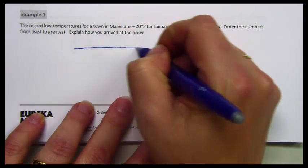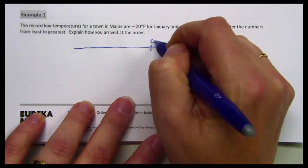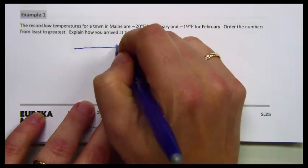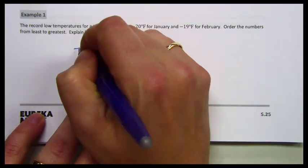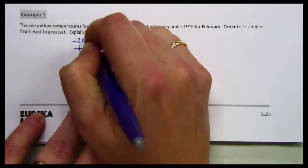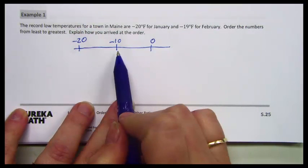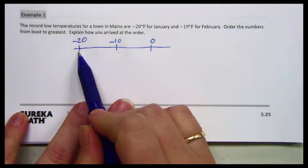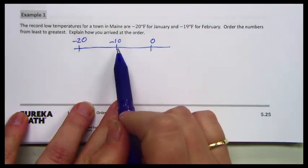So if we drew our number line and took a look at this being 0, negative 10 being here, negative 20 being here, we would know that negative 10 is larger than negative 20 because it is to the right.